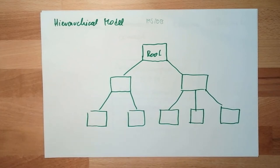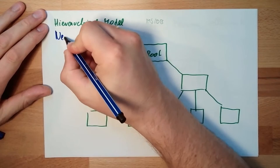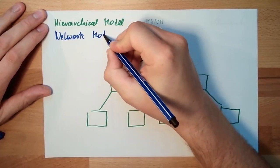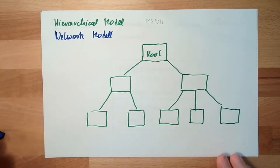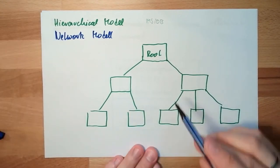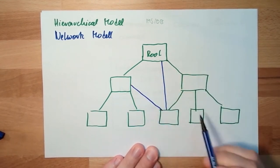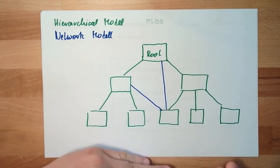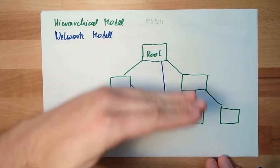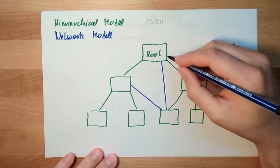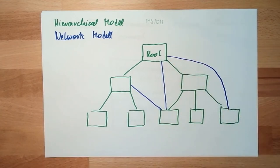And the outcome was a so-called network database model. This network model means that there can also be relations somewhere in between. It doesn't really matter how many parents in which hierarchical order they are. It can be just somehow connected.